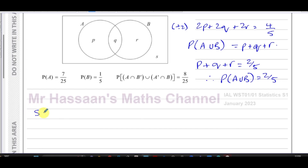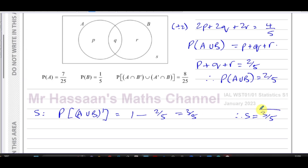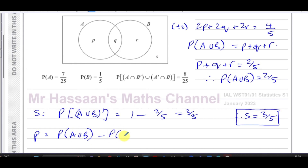S is the complement of A union B, so S equals one minus two fifths, which is three fifths. For P, it's A union B minus the B part: P equals P(A∪B) minus P(B) = 2/5 minus 1/5 = one fifth.